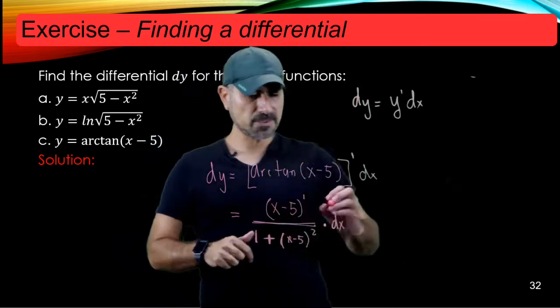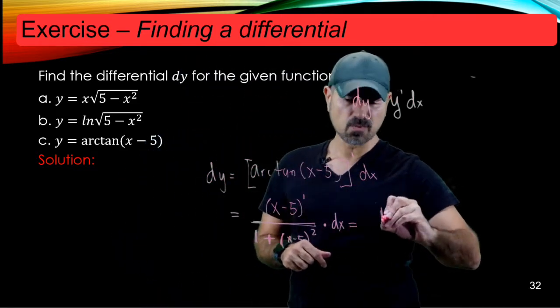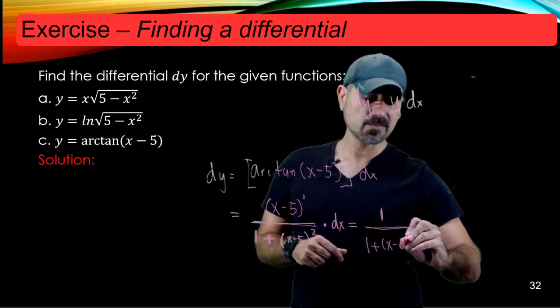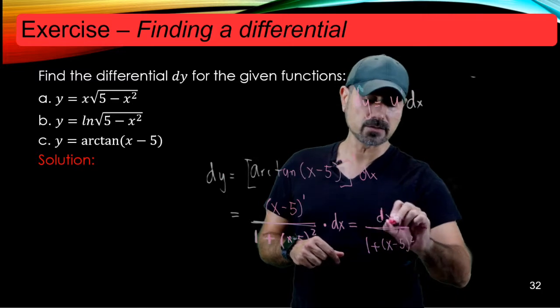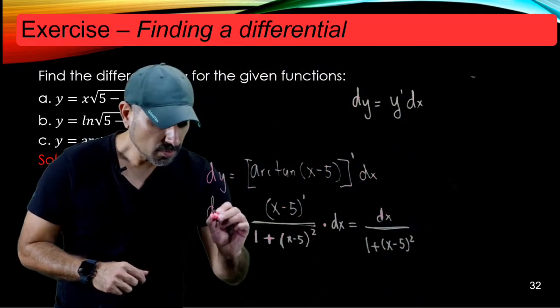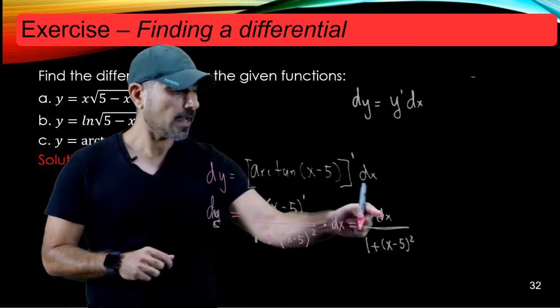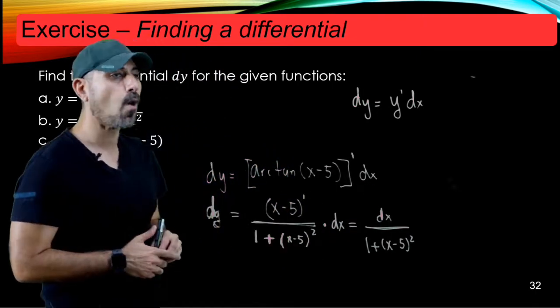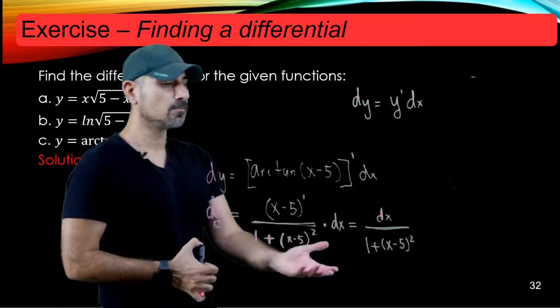Alright, what is the derivative of x minus 5 prime? And that is 1. So 1 over 1 plus x minus 5 quantity squared dx is telling us how the change in x relates to the change in y for different x locations.